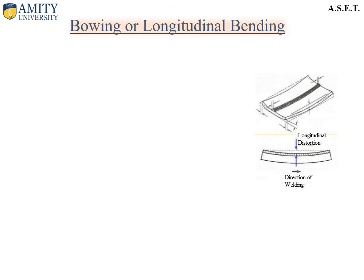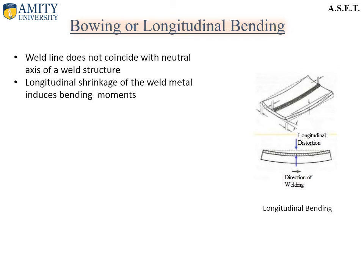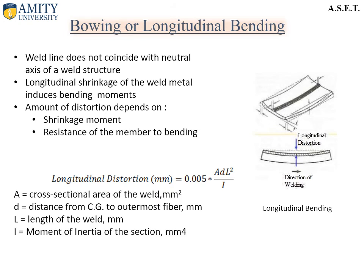Now let us discuss bowing or longitudinal bending. This distortion happens when the weld line does not coincide with the neutral axis of the weld structure. Longitudinal shrinkage of the weld metal induces a bending moment; the amount of distortion depends on the shrinkage moment and resistance of the member to bending. The distortion can be calculated using an expression where A is the cross-sectional area of the weld, d is the distance from the center of gravity to the outermost fiber, l is the length of the weld, and I is the moment of inertia.